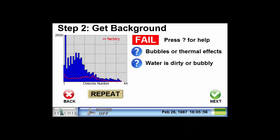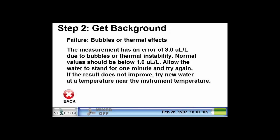We seem to have a problem with the background measurement. The fail icon tells us that the background measurement is not of acceptable quality. In this case, there seems to be some bubbles or dirty water that is causing the failure. If we press on the question mark next to one of the messages, a detailed description of the problem and some suggestions of things to try will be displayed. Note that each warning message will have its own detailed description and a set of suggestions.